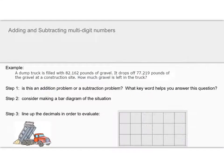Let's take a look at another example. A dump truck is filled with 82.162 pounds of gravel. It drops off 77.219 pounds of gravel at a construction site. How much gravel is left in the truck? So again, step one. Addition or subtraction. I'm looking for keywords in here, and one is drops off. Let's highlight that, because that sounds like I'm getting rid of something which might be subtraction. Then we also have how much gravel is left. So I'm definitely removing something if something's left behind. All of that points to this being a subtraction problem. The keywords are drops off, and even left is a keyword in this as well.